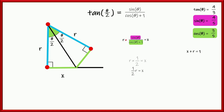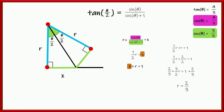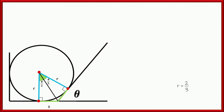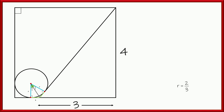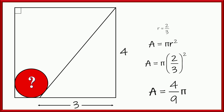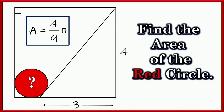Now we know x plus r equals 1, and x equals r/2. Substituting: one half r plus r equals 1. Getting a common denominator, 3/2 of the radius equals 1. Multiplying by the reciprocal, the radius equals 2/3. So putting that back in context of our original diagram, that red circle has a radius of 2/3. Finding the area using pi r squared: 2/3 squared is 4/9, so the area of that red circle is 4π/9.